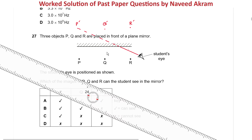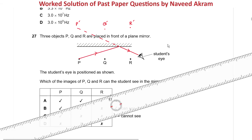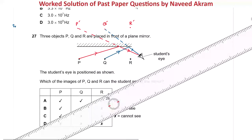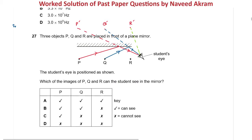The ray goes from image P-dash to the eye, and the incident ray from P to the mirror is drawn accordingly — so object P can be seen by the student's eye. Now for Q: the ray from the image of Q to the eye is the reflected ray, and the incident ray goes from the object to the mirror and then to the student's eye.